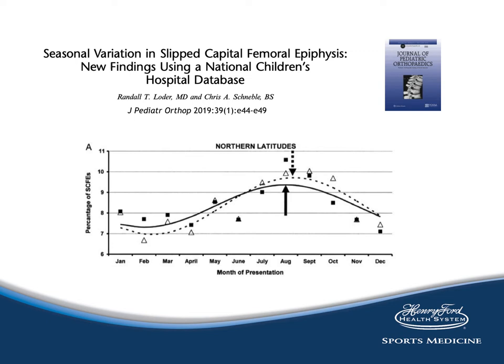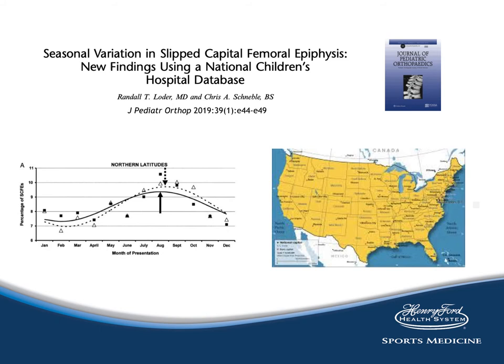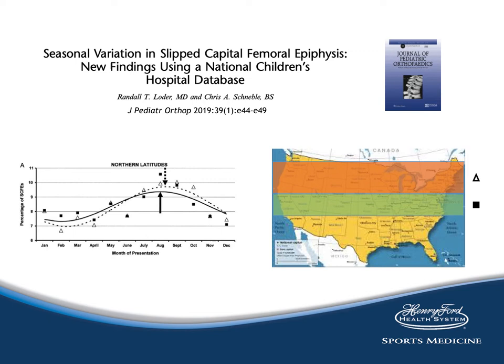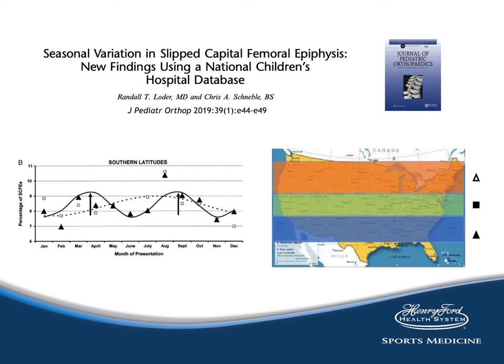When you look at the seasonal variation, there are differences based on what zone of the country the patient lives in. Northern latitudes, where it tends to be colder in winter, show the peak occurrence a little bit later in the summer compared to kids in the central portion of the country. Kids in the more southern states actually show a double sine wave because they're out playing sports in the spring as well as summertime — so kids in the southern United States have a dual peak for SCFE.